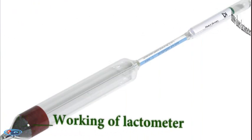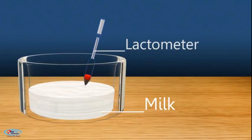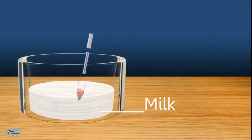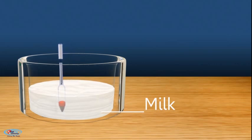Working of lactometer: It is based on the Archimedes principle. When we put lactometer inside the liquid, it experiences buoyant force, that is weight of displaced fluid. Hence, it measures relative density in the given scale of lactometer.